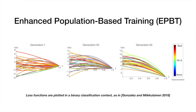ePBT discovers concave loss functions which prevent the network from overfitting. Like the Baikal loss function, the loss functions discovered by ePBT penalize low entropy prediction distributions centered around one. Results on the widely used image classification benchmark CIFAR-10 show that ePBT is effective in discovering loss functions for better and faster learning.